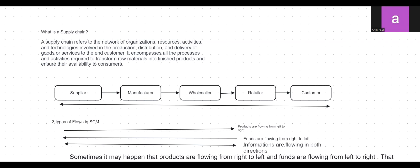This network of organizations and resources is involved in the production, distribution, and delivery of goods and services to end customers. It encompasses all the processes and activities required to transform raw materials into finished goods and ensure their availability to consumers.